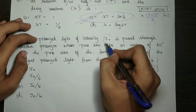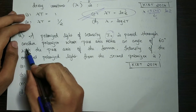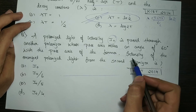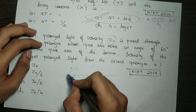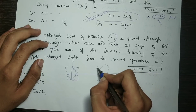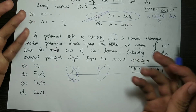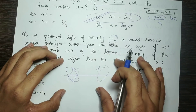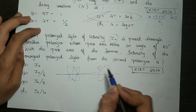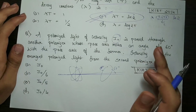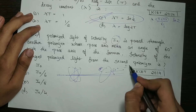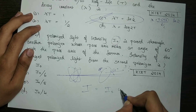Next question: Polarized light of intensity I0 is already polarized. I0 is passed through another polarizer whose pass axis makes an angle of 60 degrees with the pass axis of the former. Find the intensity of the emergent polarized light from the second polarizer.